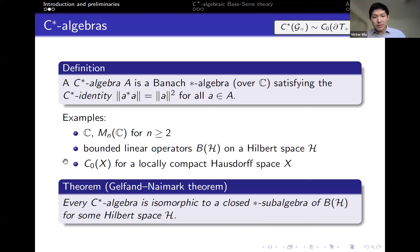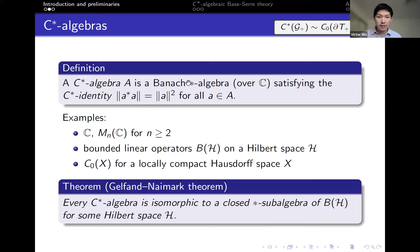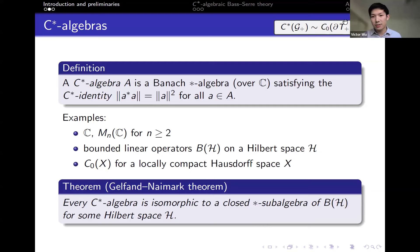A final example comes from the C0 functions on a locally compact Hausdorff space — these are the functions that vanish at infinity. Here the operations are all pointwise, the star operation is pointwise conjugation, and the norm is the supremum norm, so these guys are also a C*-algebra. This is what's happening up here on the right-hand side: this is the C0 functions on a space called the boundary of T+, which I'll explain later.